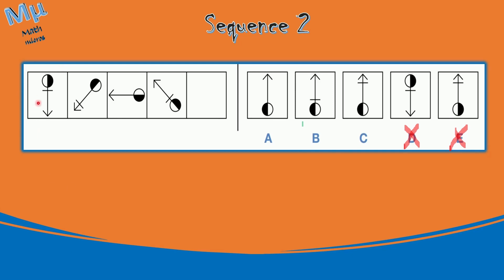Looking closely again, there is a short line attached to the main line. The short line is moving positions: first it is near the ball, then in the second figure it moves near the arrow, and in the third figure it disappears. So the sequence is: near the ball, near the arrow, disappears, then near the ball again. The next step should be near the arrow. Only option C has the short line near the arrow. Option B has it near the ball, so we rule out B. Option A doesn't have the line disappear correctly, so we rule out A. Therefore, option C is the right answer.